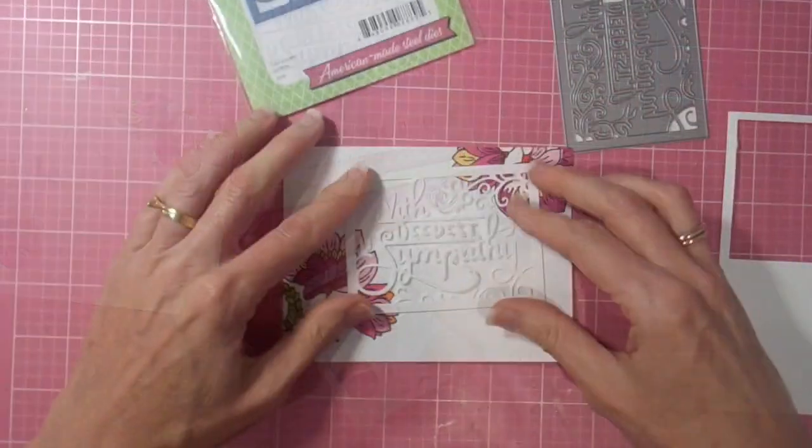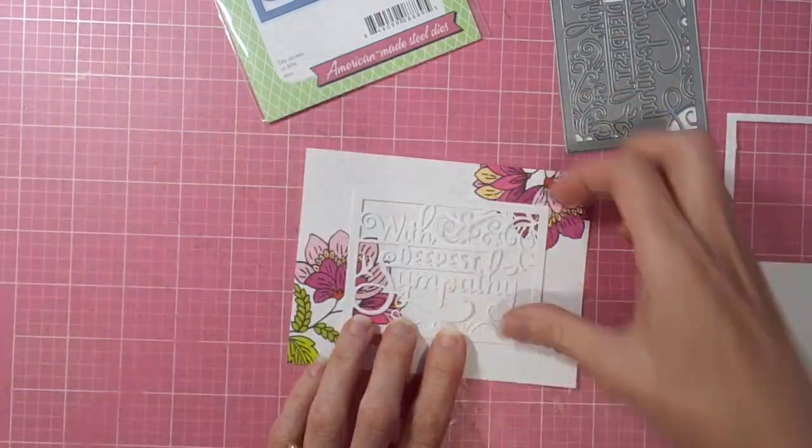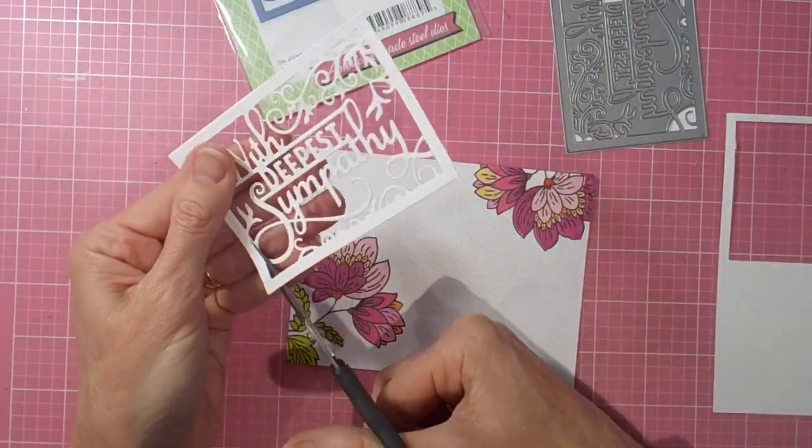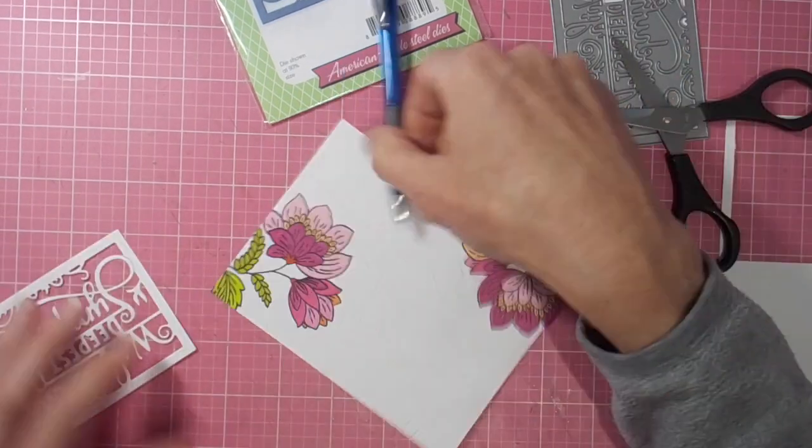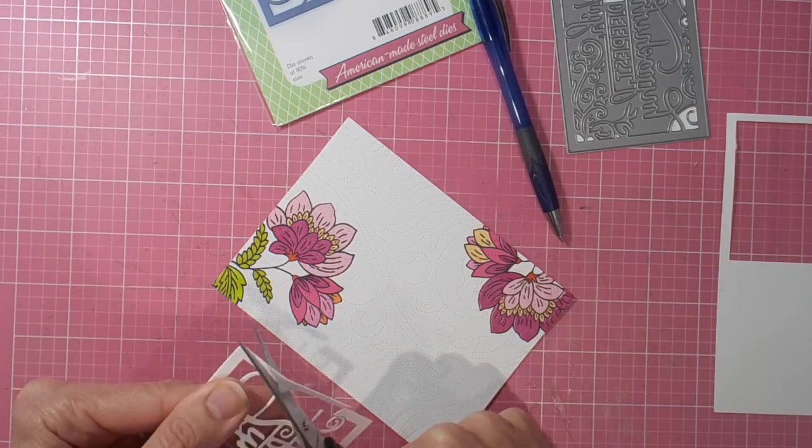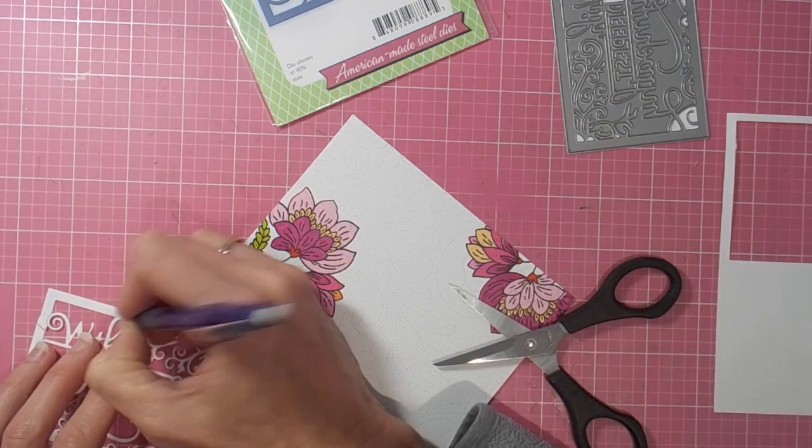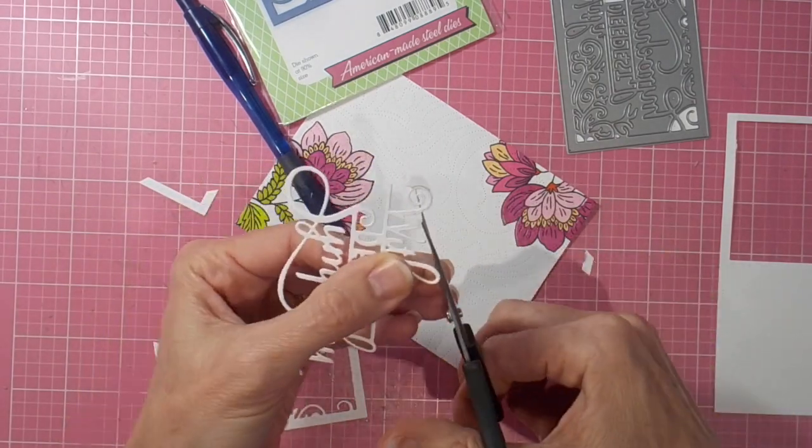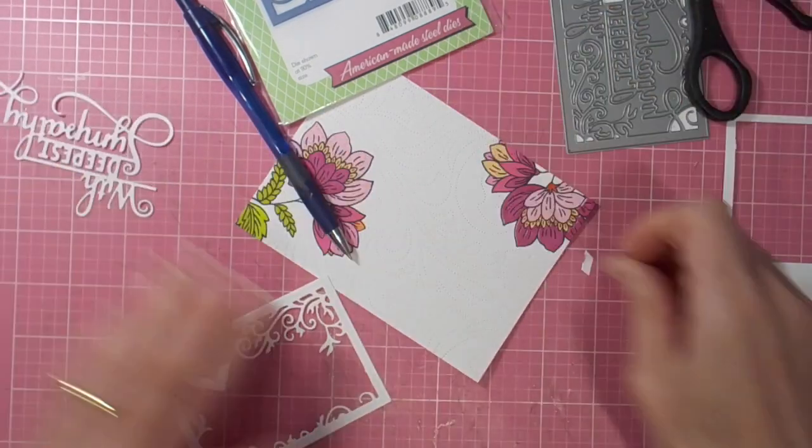Now I really wanted to use this 'with deepest sympathy' die cut from Impression Obsession. It's so beautiful, but I didn't like the way it looked with the frame around it, so I'm going to cut off the frame. But I'm going to just continue these letters beyond the frame, or into the frame really, so that it doesn't look like those letters are just chopped off and going nowhere.